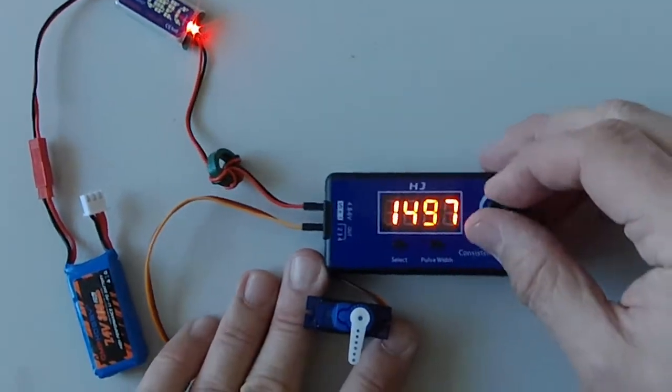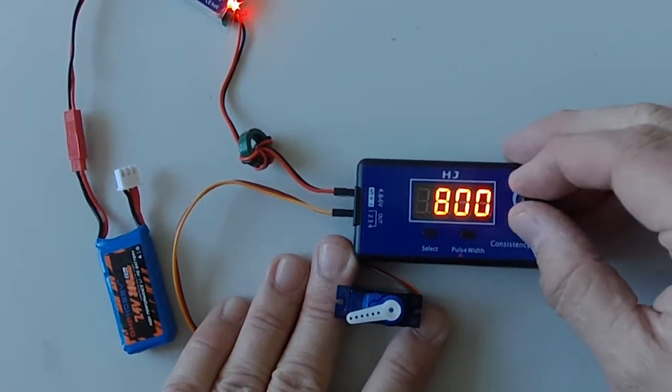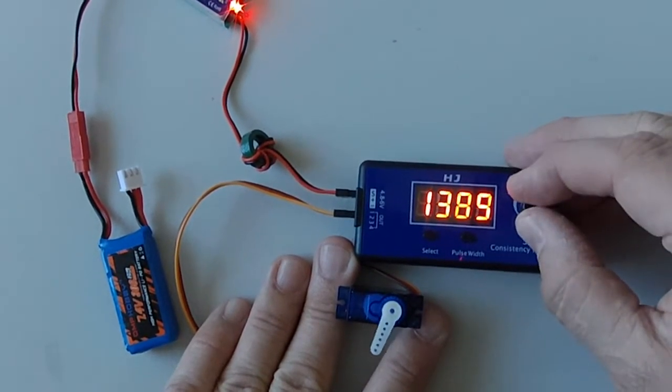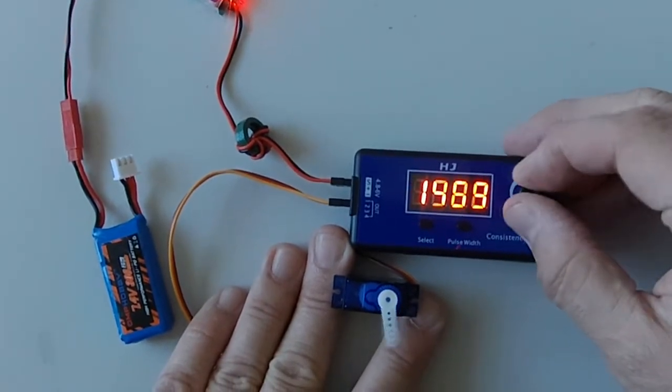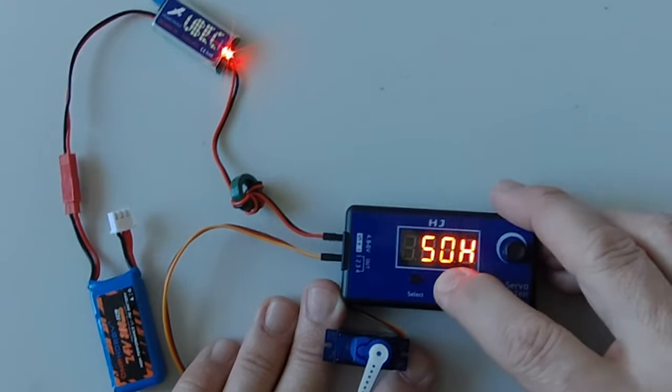But at 250 Hertz, this receiver gets a little jittery because it's not used to that high of a frequency. The standard is 50 Hertz.